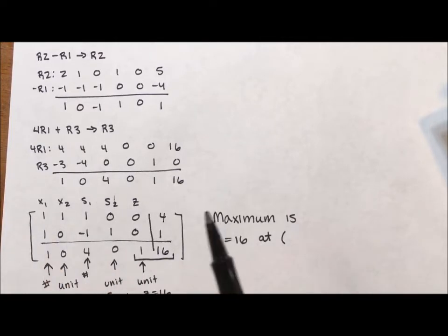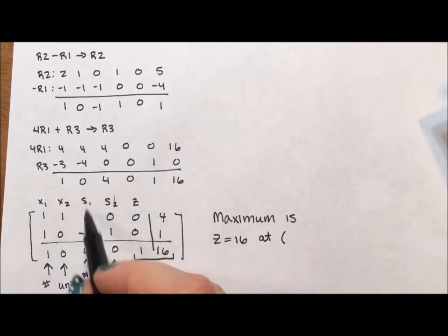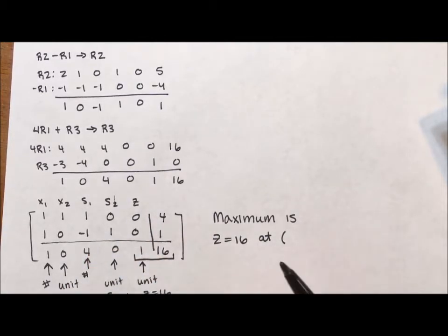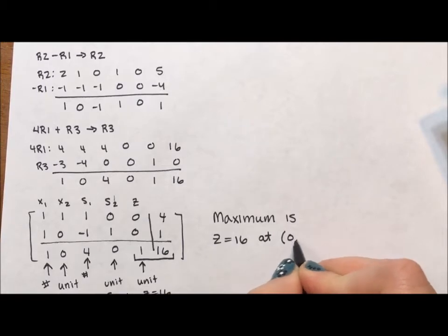Notice we don't have an answer for X sub 1. If we don't have an answer for X sub 1, that means X sub 1 is set to 0. So is S sub 1, but we don't really need to worry about that because we're not really solving for our slack variables, just X1 and X2. So the answer is 16 at 0, 4.